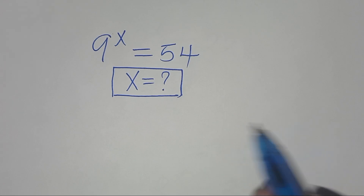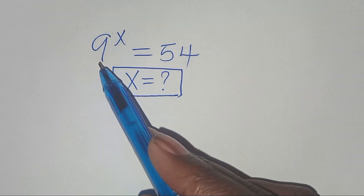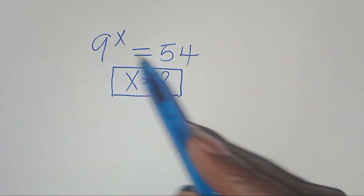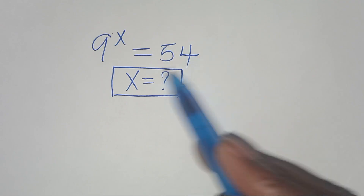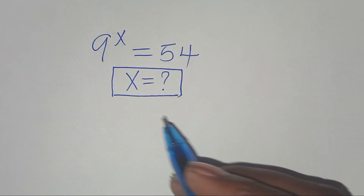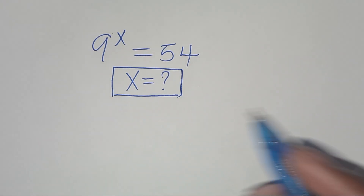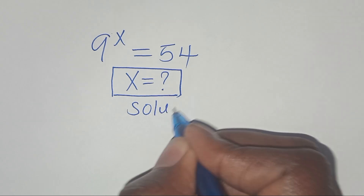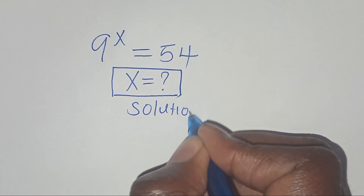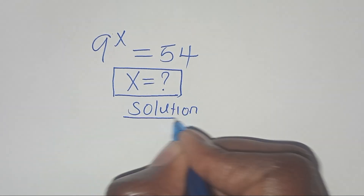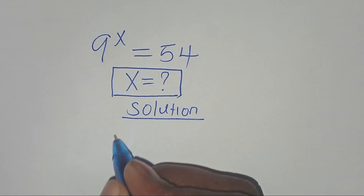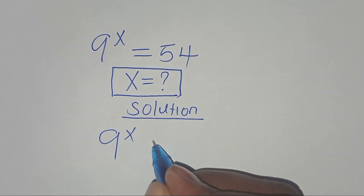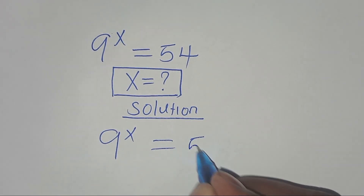You are welcome to solve this nice exponential equation, which is 9 to the power x, this is equal to 54. What is the value of x? Now let's present a solution. We have 9 to the power x, this is equal to 54.